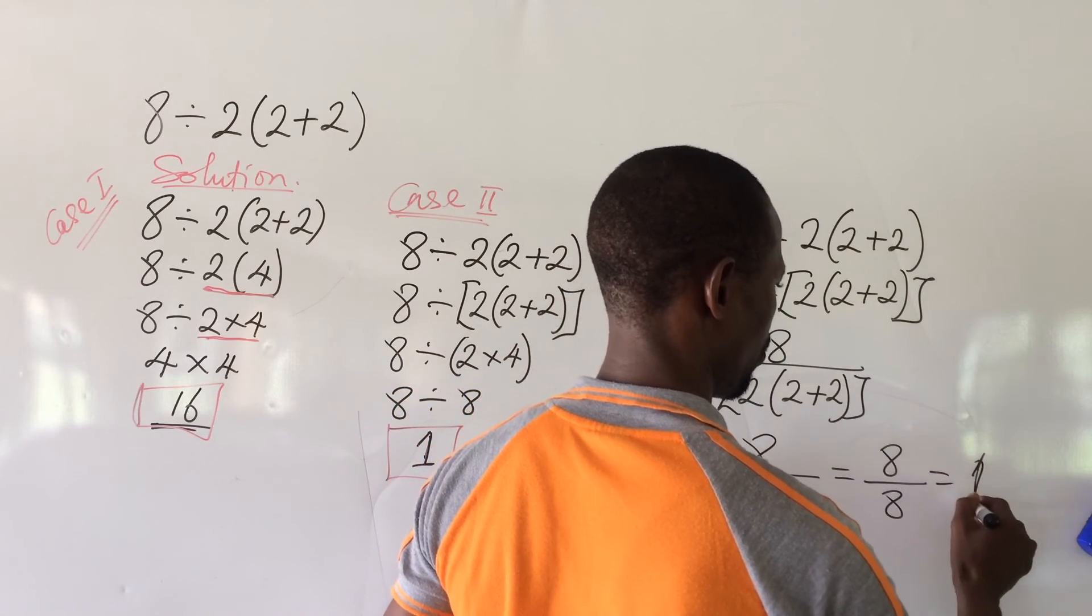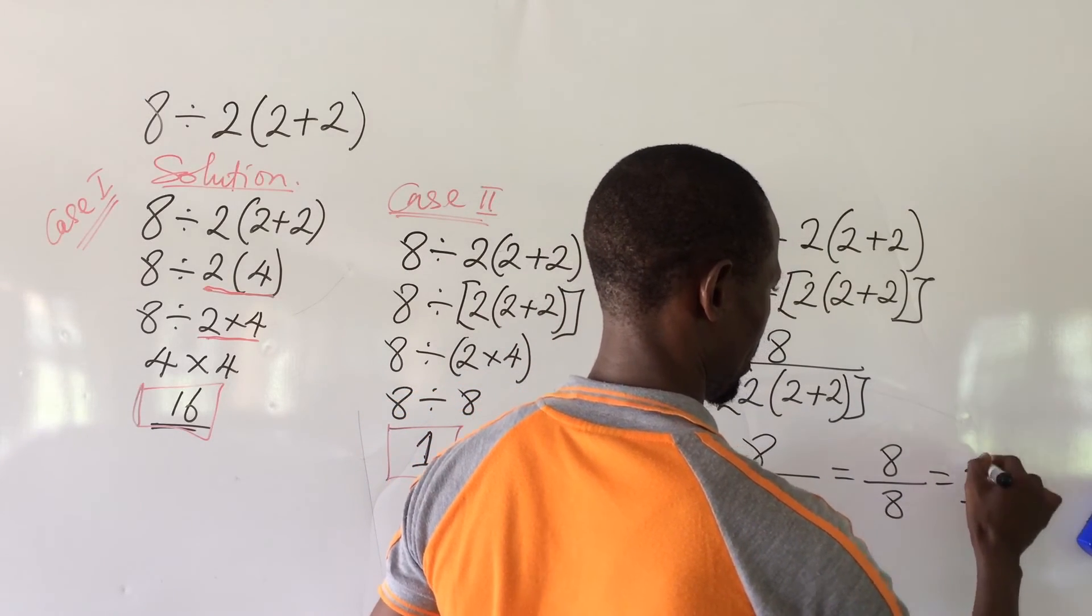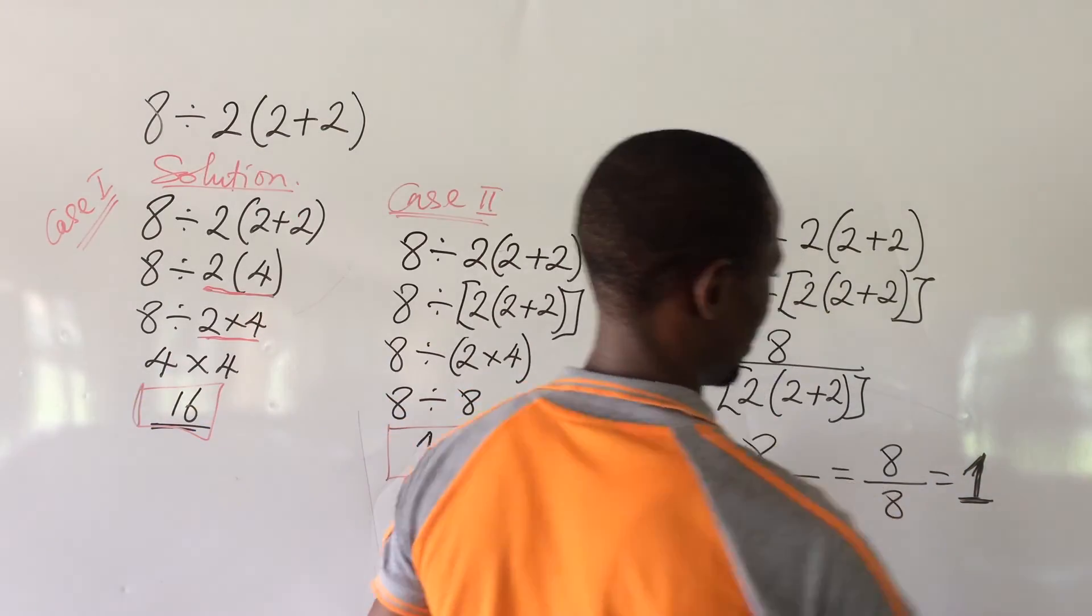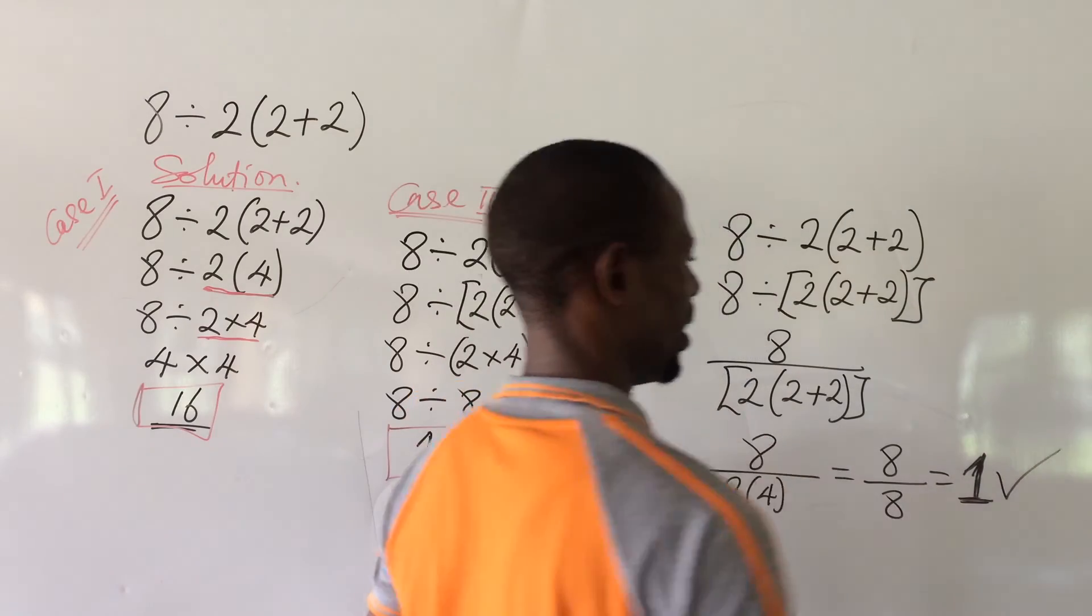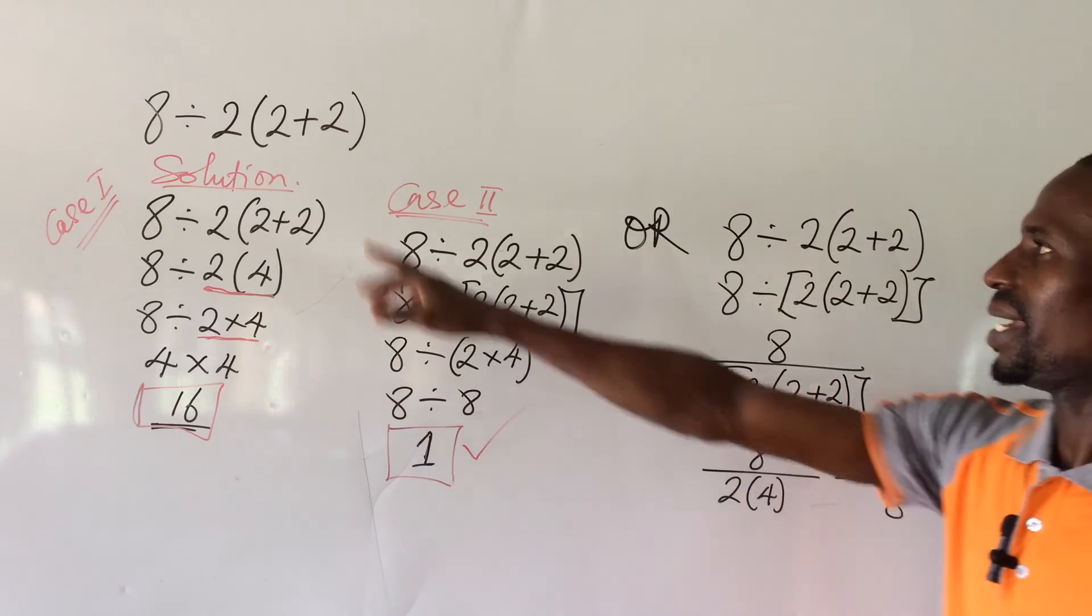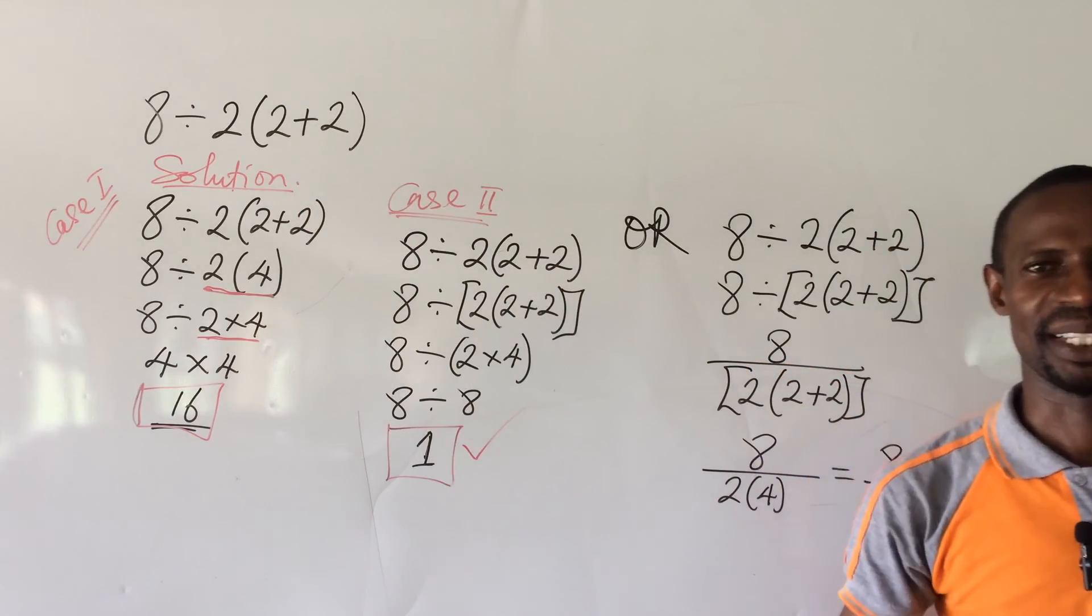So this is 4, 2, 1. So this also gives us 1. So this shows that this answer is the correct 1. So 1 from that expression here is the correct answer.